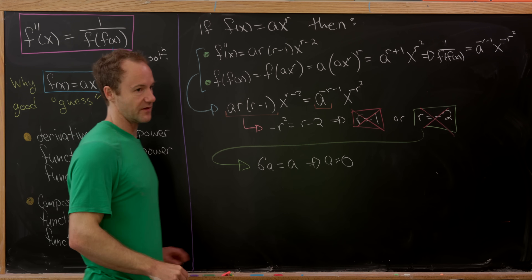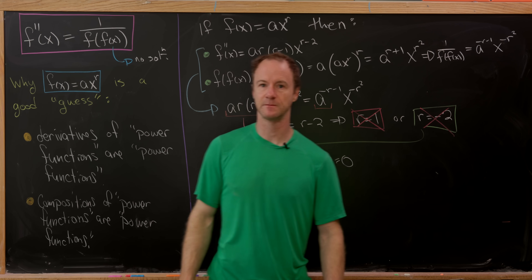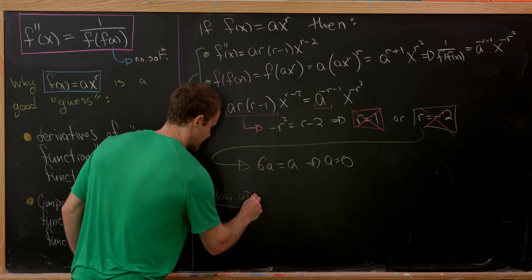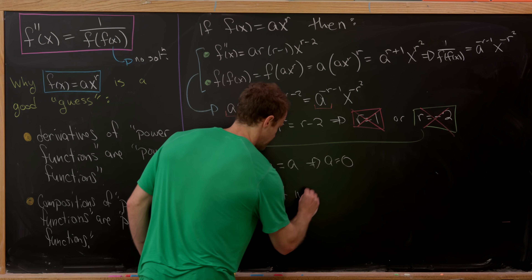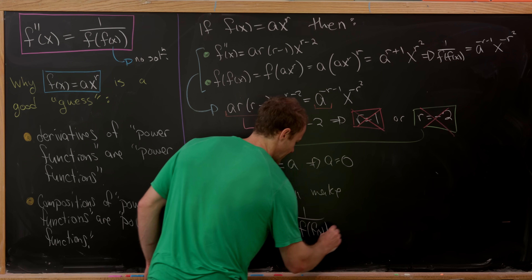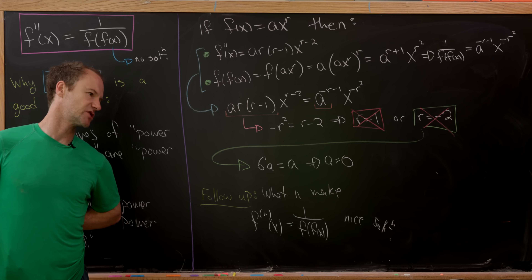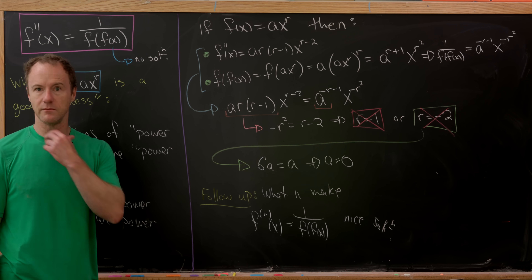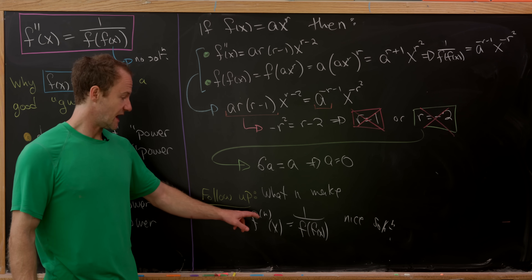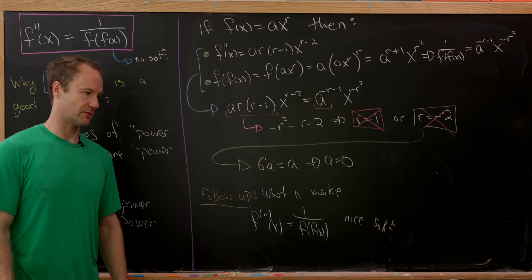To be careful: there's no solution of this power-function form — maybe there's a solution of another form, so if you find one feel free to post in the comments. A natural follow-up question is: for which values of n does the nth derivative of f(x) equal 1 over f(f(x)) have a nice solution? And a further generalization would be to have n derivatives on the left and m compositions on the right — a mega-generalization of this problem. And that's a good place to stop.